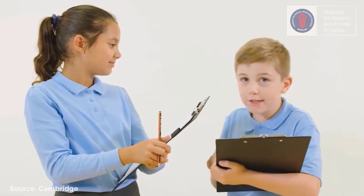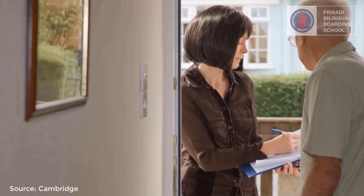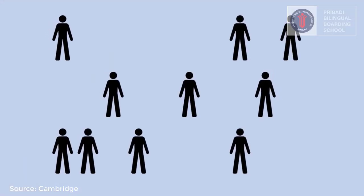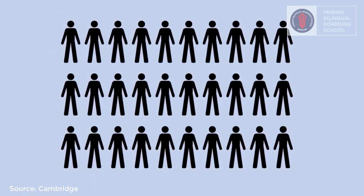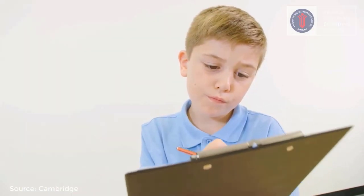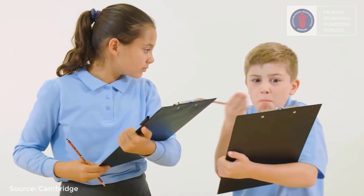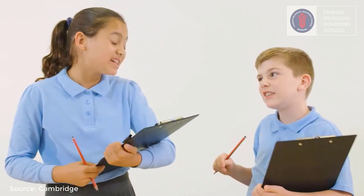Now that you know how to do a survey, you need to collect your information and record it. Ask different people to answer the survey questions — the more people you ask, the better. Our investigators are going to ask 30 people. Make a tally on your data collection sheet of the number of people who answered yes to each medicine. This adds up to more than 30 — we only asked 30 people. Let's do it again.